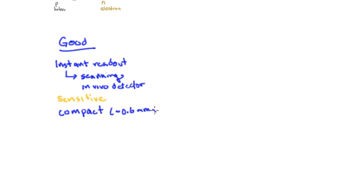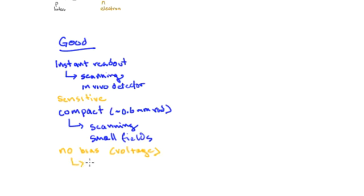They're also compact, with maybe a 0.6 millimeter radius active region. As a result, scanning with them is very accurate—you can look at small fields and get a very good measurement of sharp penumbra. There's no bias voltage applied to these detectors, which is good for in vivo use, and they're very rugged and durable.